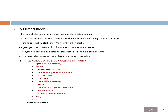An important concept with nested blocks is scope and visibility of variables. A variable declared in the main outer block, such as grand_total, is accessible in the nested block. However, a variable declared in the nested block, such as sub_total, cannot be accessed in the main block. These scope and visibility rules are common across Oracle's programming language, so practice is recommended.